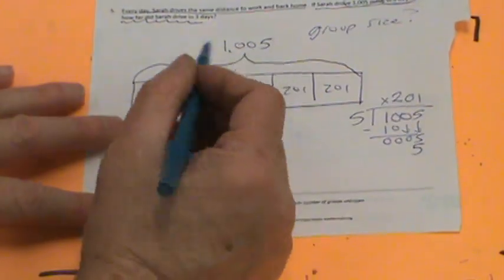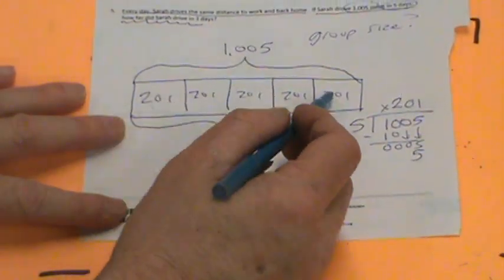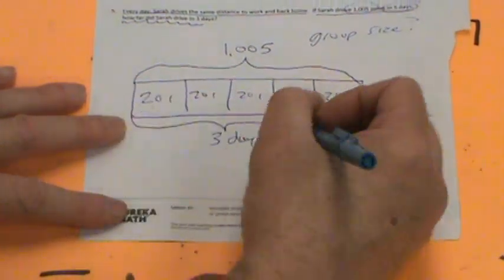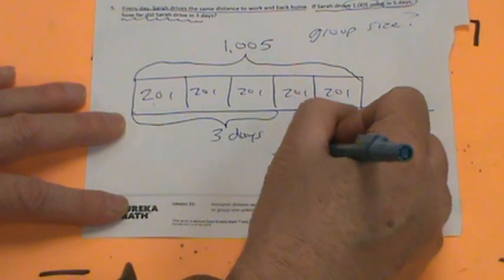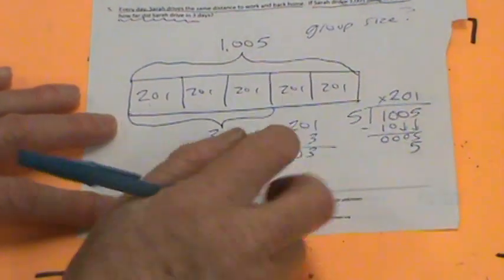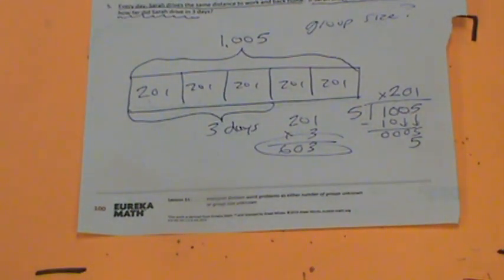201 days equals 1,005. But we're just interested in three days. Let's just multiply. 201 times 3. 1 times 3 is 3. 0 times 3 is 0. 2 times 3 is 6. So in three days, she drives 603 miles.